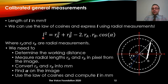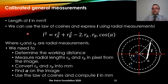In summary, to determine the length of a general object: we determine the working distance using the laser information, we measure RA and RB from the image, we convert RA and RB into millimeters using the calibrated model, we estimate the angle alpha from the image, and then we use the law of cosines to estimate the length of L in millimeters.